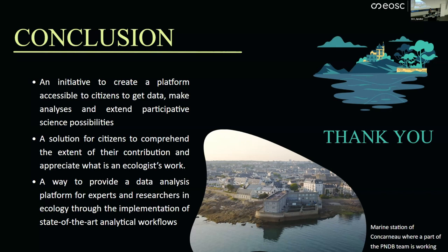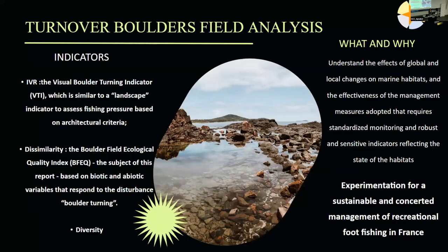We have time for one question. How does boulder turning work? You turn the boulder and count how many things are there as an indicator of diversity. You have a indicator to see when the boulder is turned over if diversity has changed between the upside and downside. There's a fixed border as the reference point, and you see the diversity from this reference point compared to other boulders that are turned over.